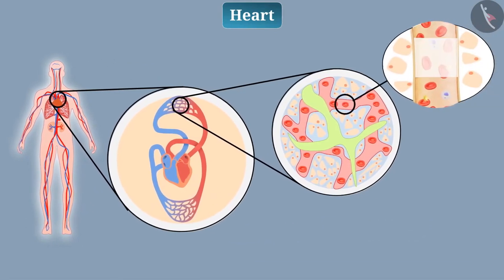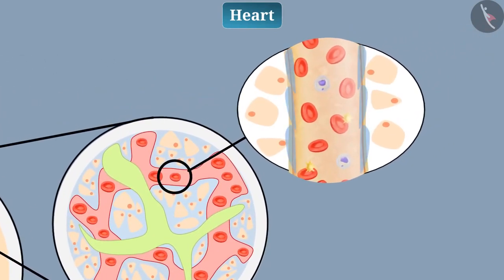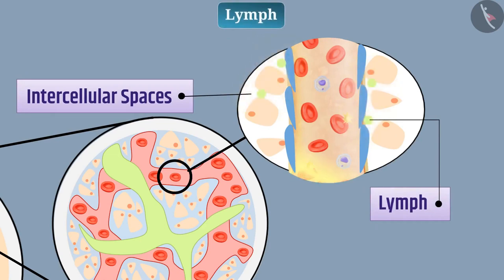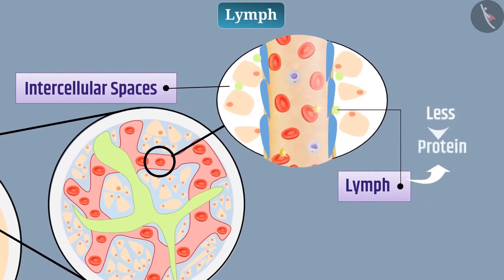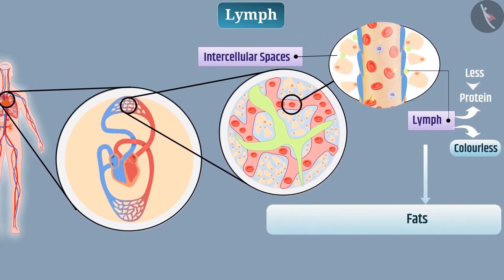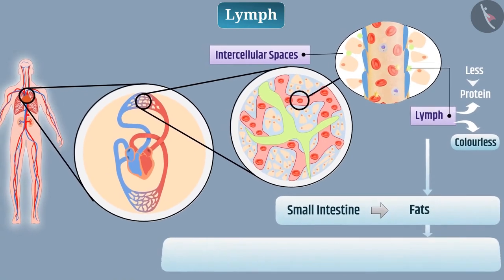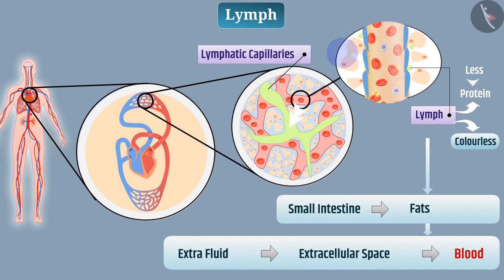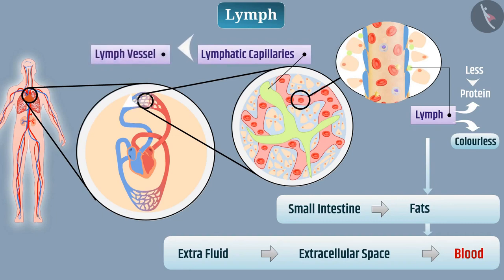Sometimes plasma, proteins and cells present in the blood migrate from the pores of the capillary wall into the intracellular spaces of the tissue. Collectively, this fluid is called lymph. Lymph is similar to plasma but has less protein content and is colorless. Lymph carries fat digested and absorbed by the small intestine and carries extra fluid from the extracellular space into the blood. The lymph enters lymphatic capillaries from the tissue spaces, which form lymph vessels that open into veins.